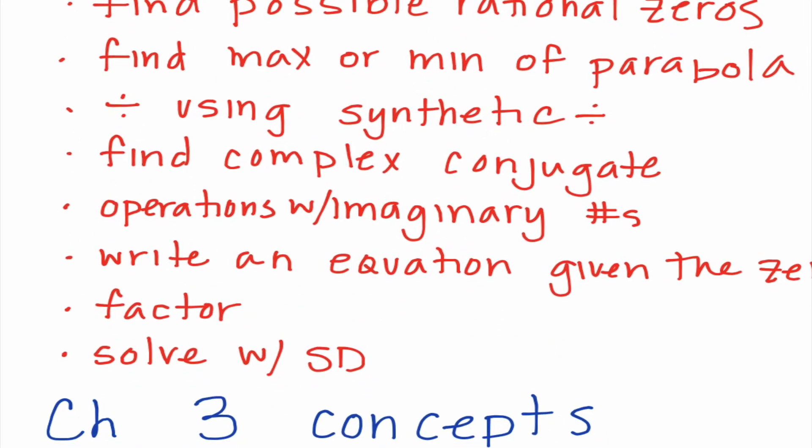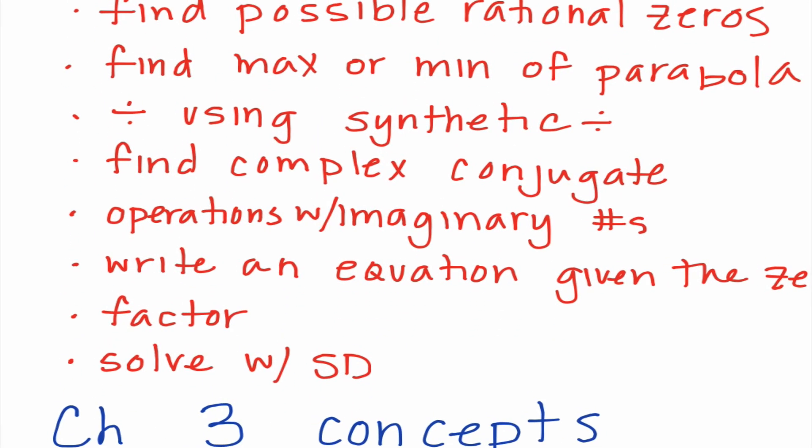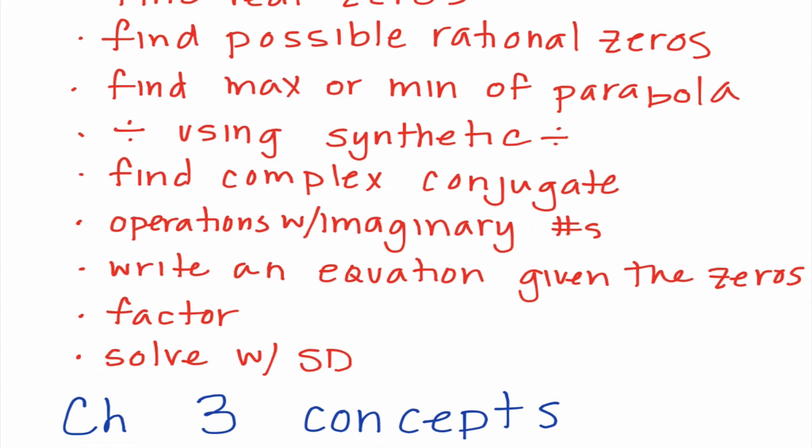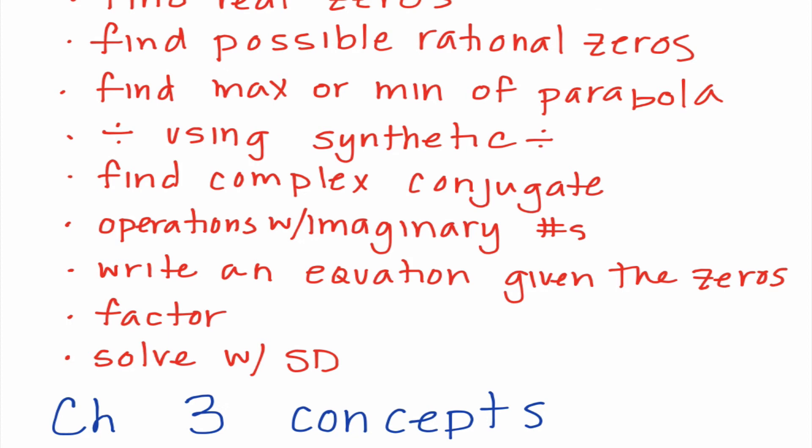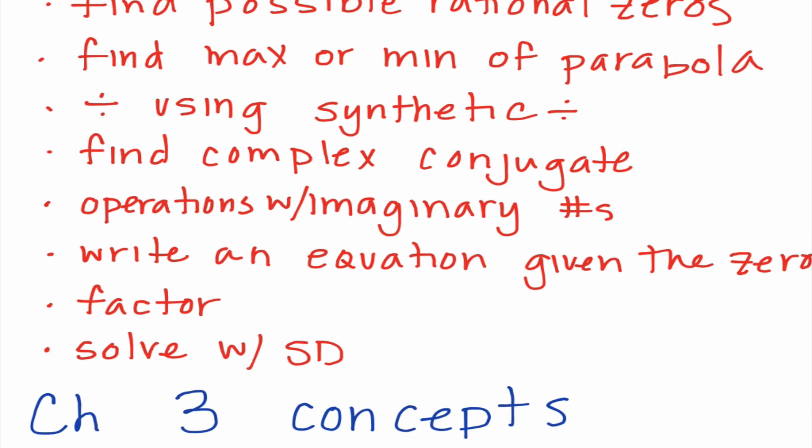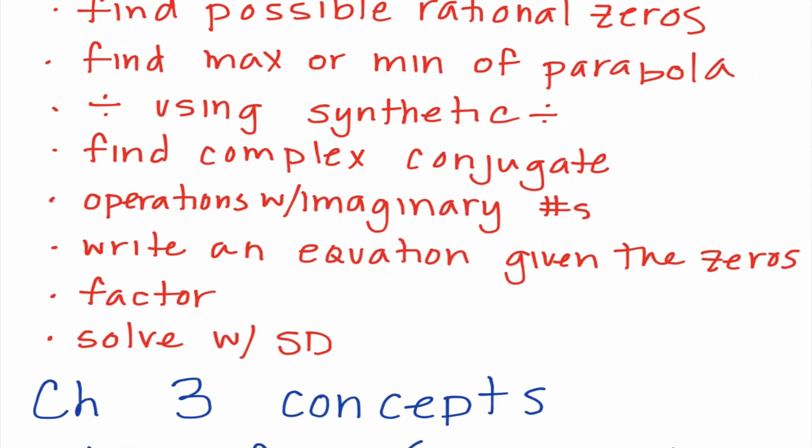Then we get into some of the complex number stuff. We need to know how to find a complex conjugate. We need to know how to deal with operations with imaginary numbers. We need to know how to write an equation if we are given the zeros, so that's kind of working backwards. We need to know how to factor. And lastly, we need to know how to solve synthetic division. When you would need to do that versus just looking at your graphing calculator is when we know that there's going to be some imaginary answers.